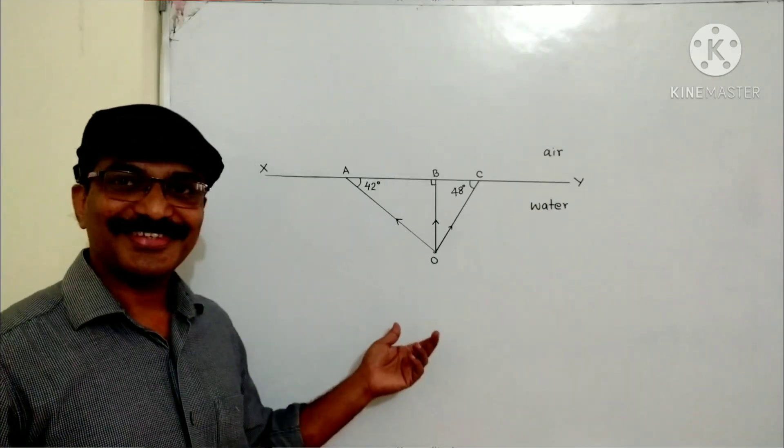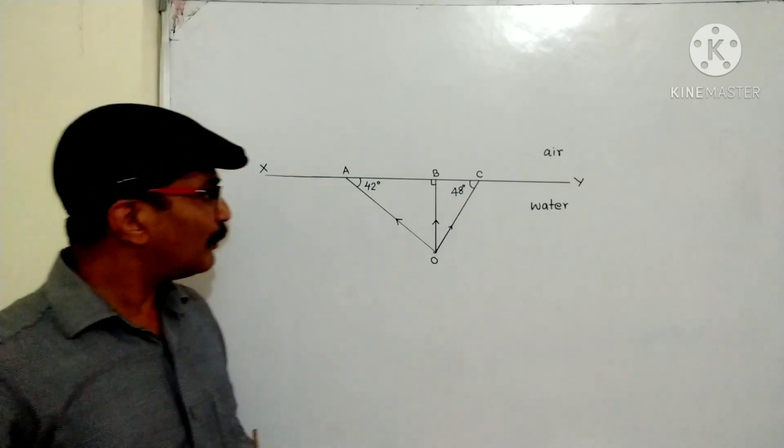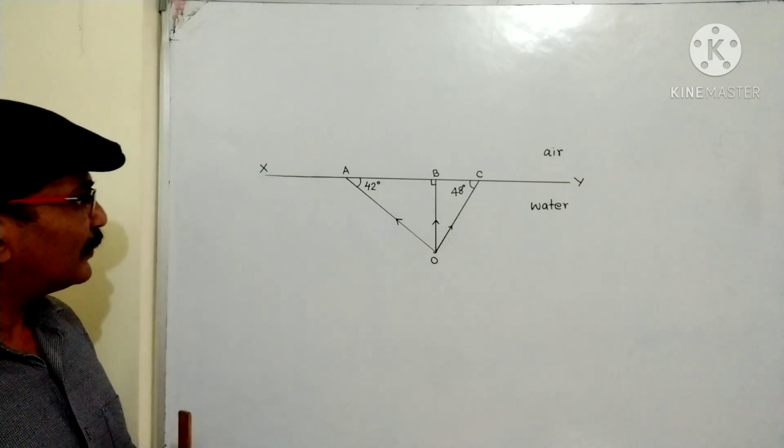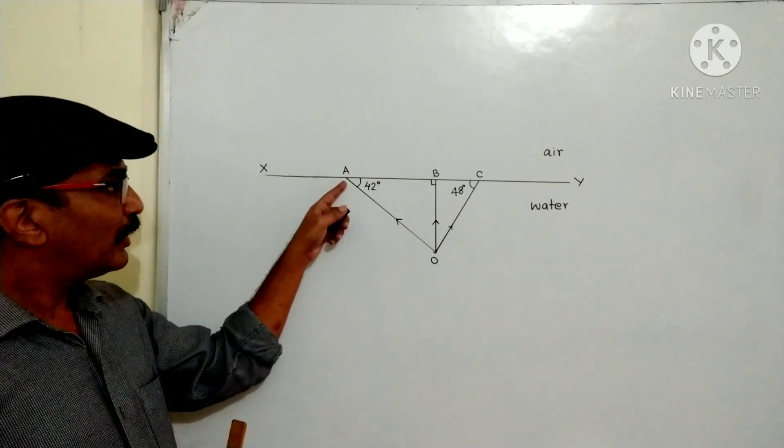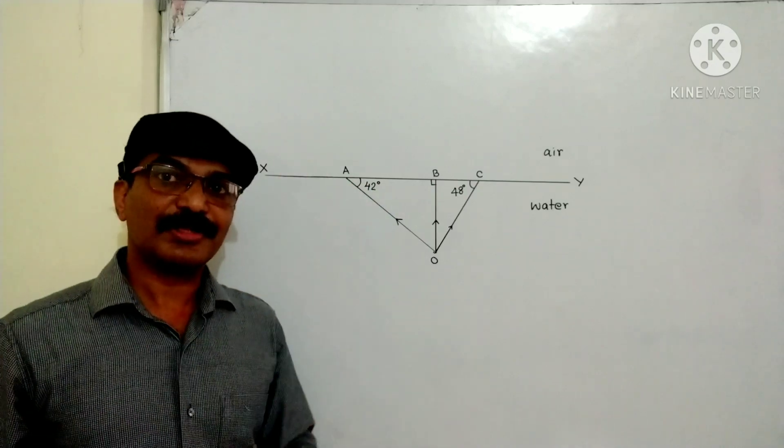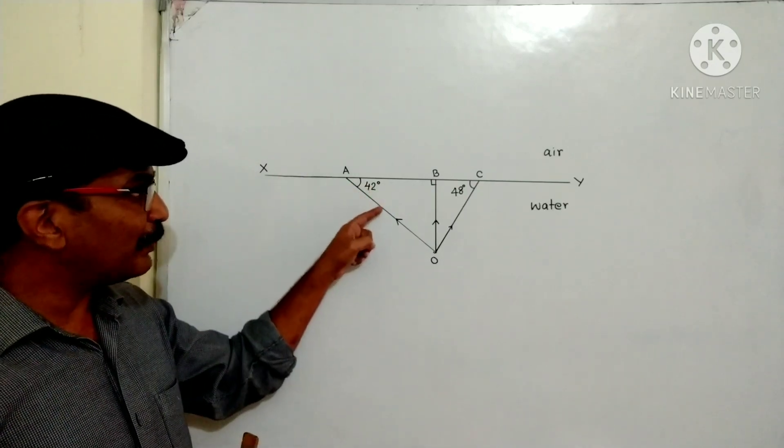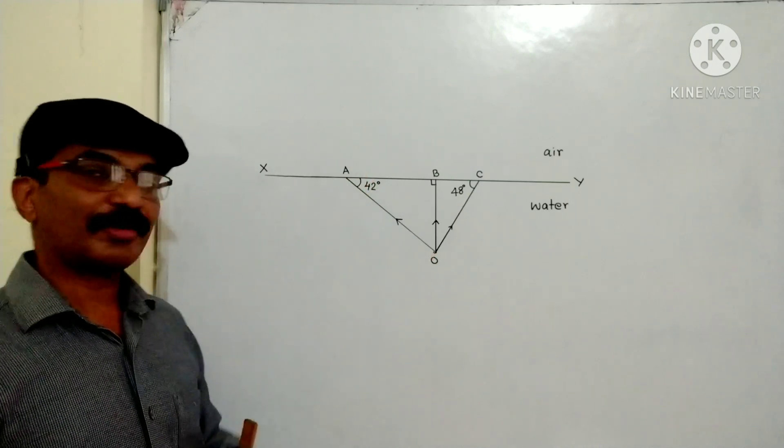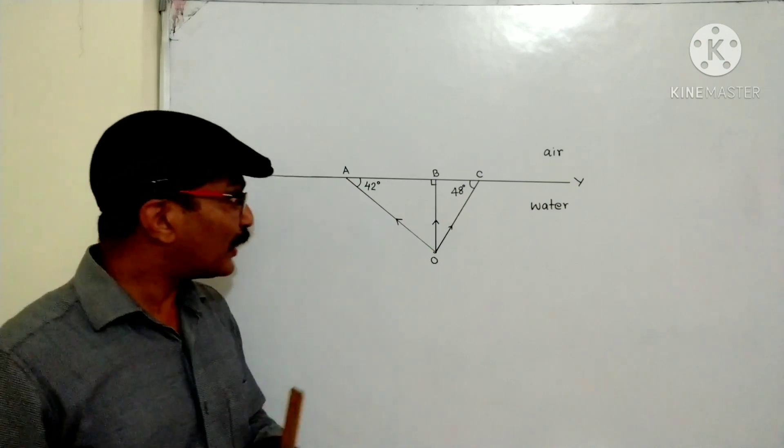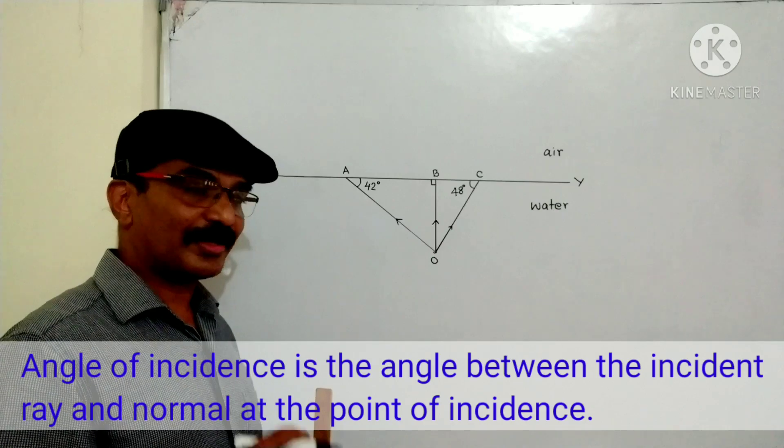The diagram is copied. And how will you approach the question? Here, for the ray O-A, 42 is not the angle of incidence. 42 is the angle between the refracting surface and incident ray. Angle of incidence is the angle between normal and incident ray.